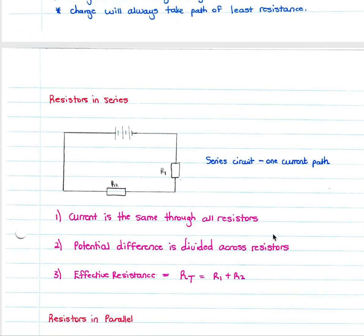In a series circuit there is only one current path. Key points: current is the same through all resistors; potential difference is divided across resistors in proportion to their resistance; and the effective total resistance equals R1 plus R2. However many resistors you have, you simply add them together to get the total resistance in a series circuit.